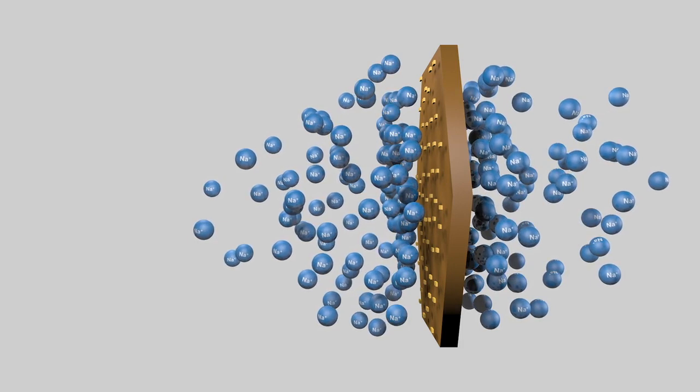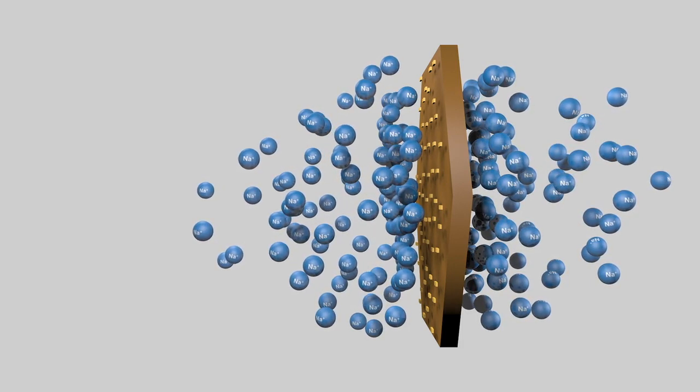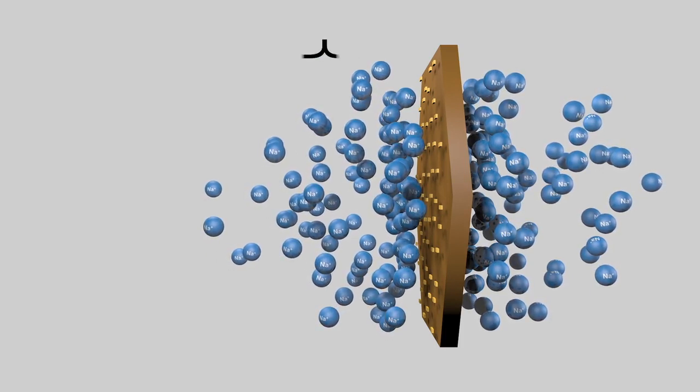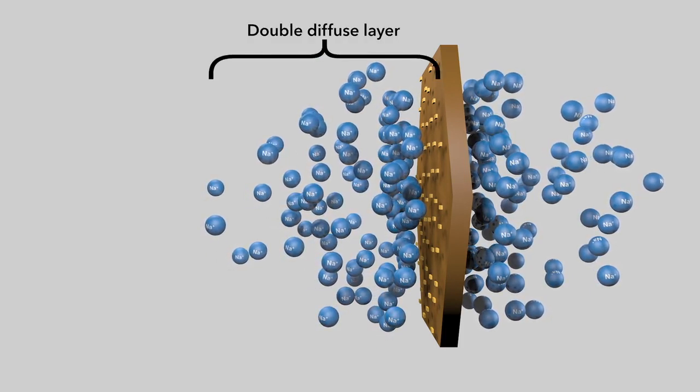This combination of charges, negatively charged sites on the clay surface, and the cloud of cations in the adjacent space is called the double diffuse layer.